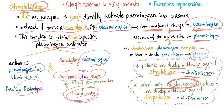The more expensive class of medications — fibrin-specific plasminogen activators — carry less risk of bleeding and less risk of allergic reaction.